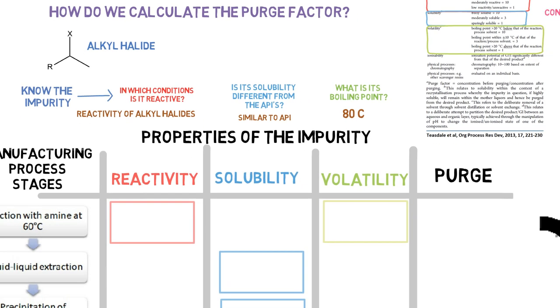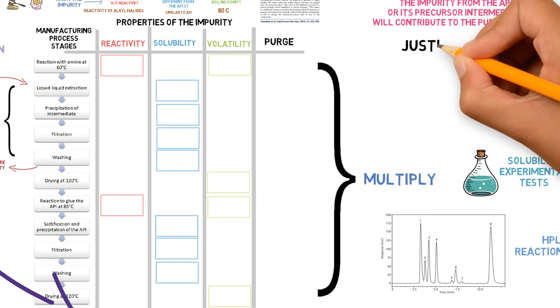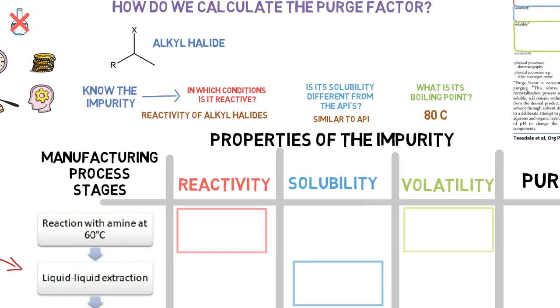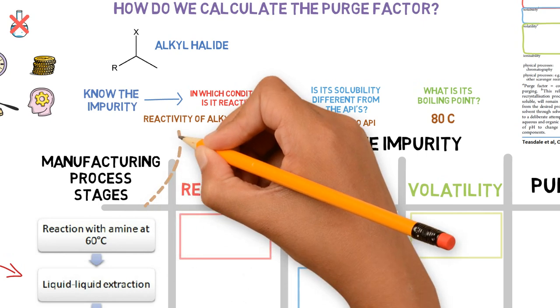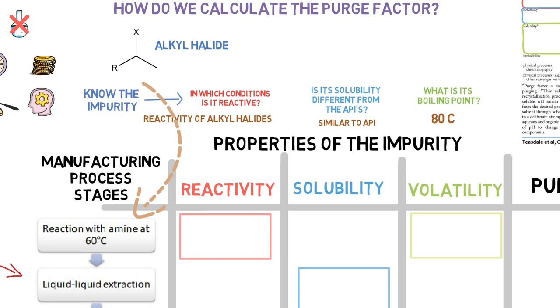Keeping the above properties in mind, we then look at the stages of the manufacturing process. We must present a scientific justification for each and every purge that is given. This impurity is the starting material of the manufacturing process, and after its introduction to the process, we first have a reaction with an amine to generate an intermediate.